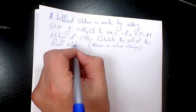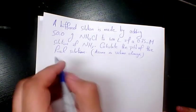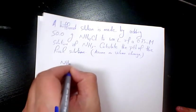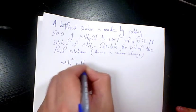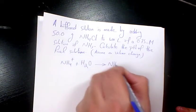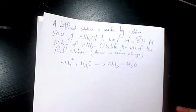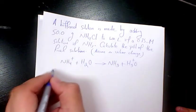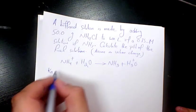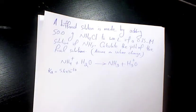We assume no volume change. Here we have this formula: NH4+ plus water produces NH3 plus H3O+. The Ka acid dissociation constant is 5.6 times 10 to the power of negative 10.